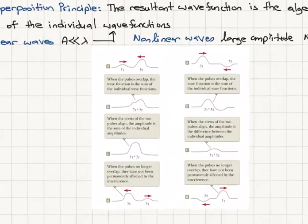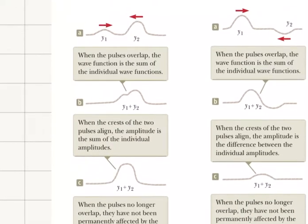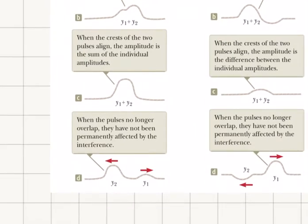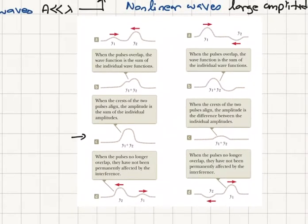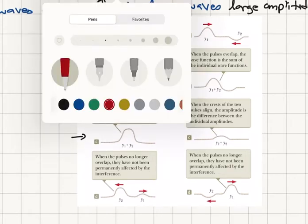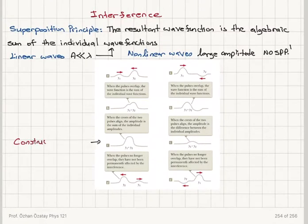Consider a linear medium where traveling waves come together and reach the same point — for example, pulses overlapping. Using the superposition principle, when the pulses come together they add up and the amplitude is the sum of the individual amplitudes. When they are no longer overlapping, it appears they haven't interacted at all and continue on their paths. This combination of separate waves producing a resultant wave is called constructive interference.